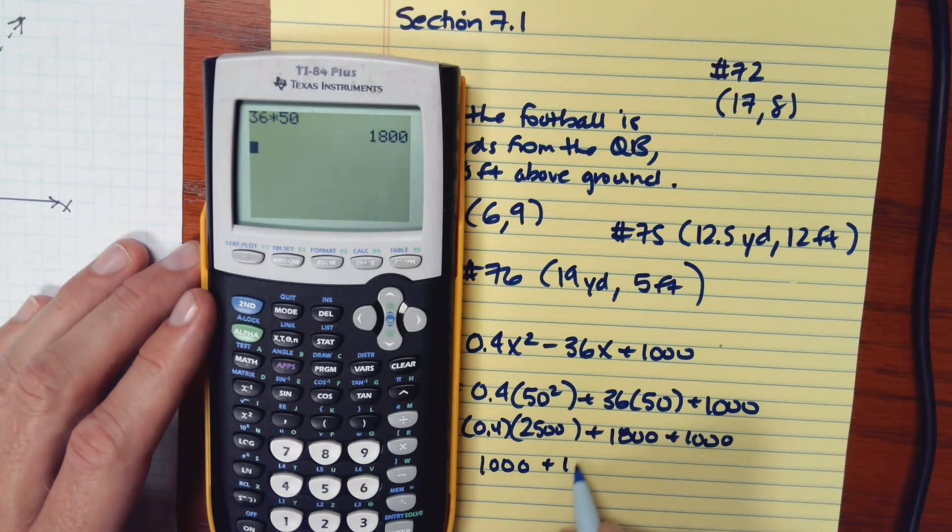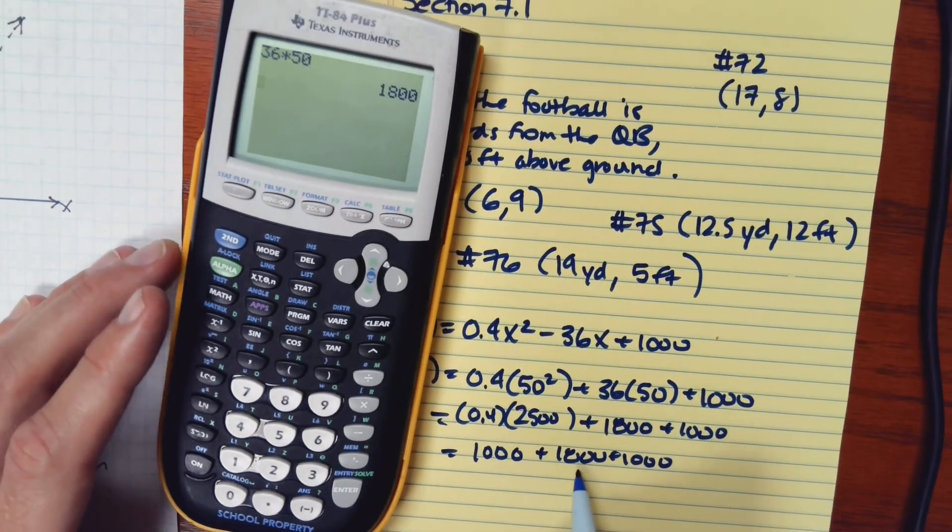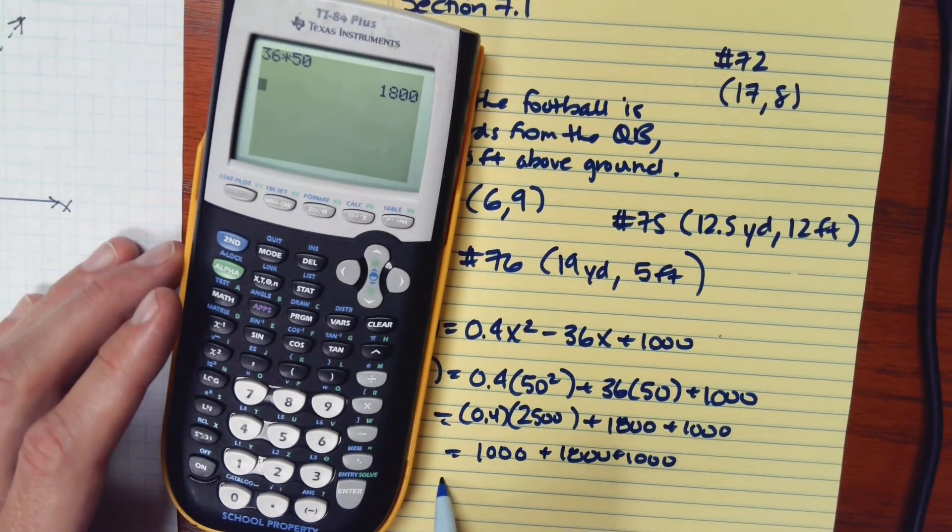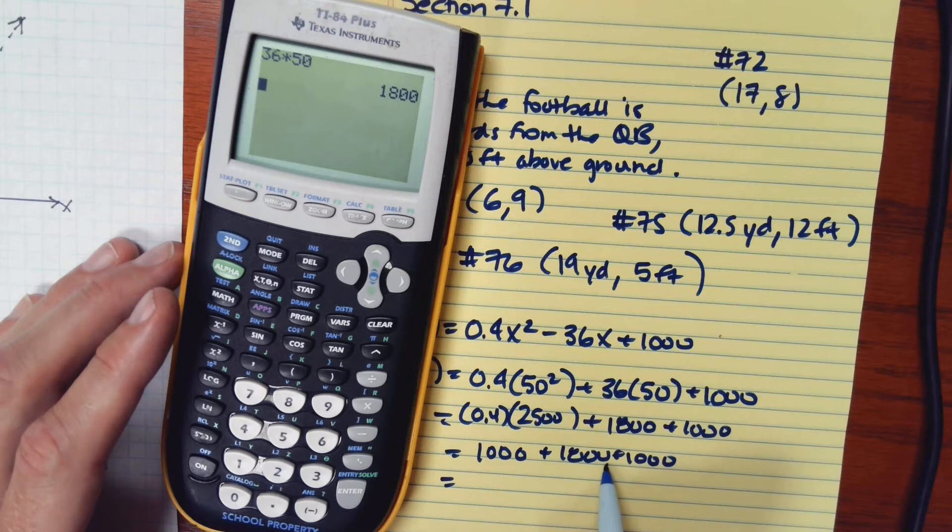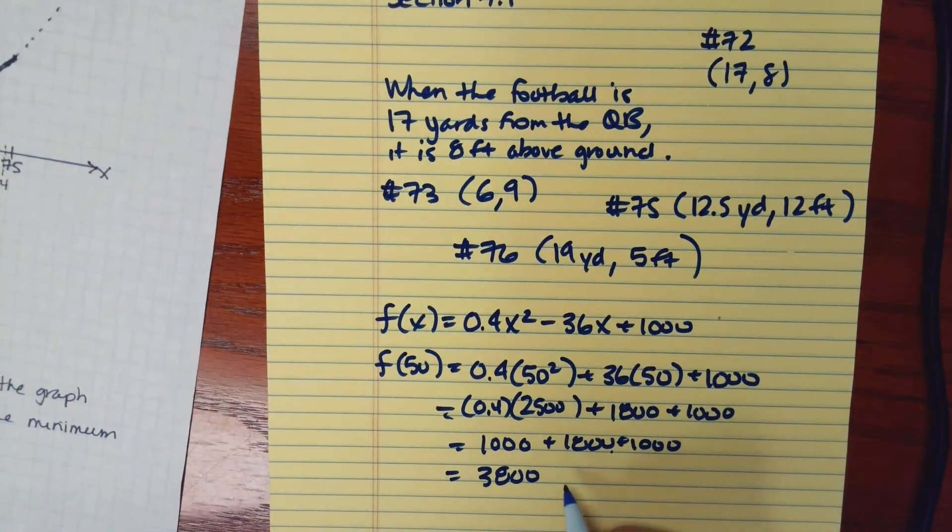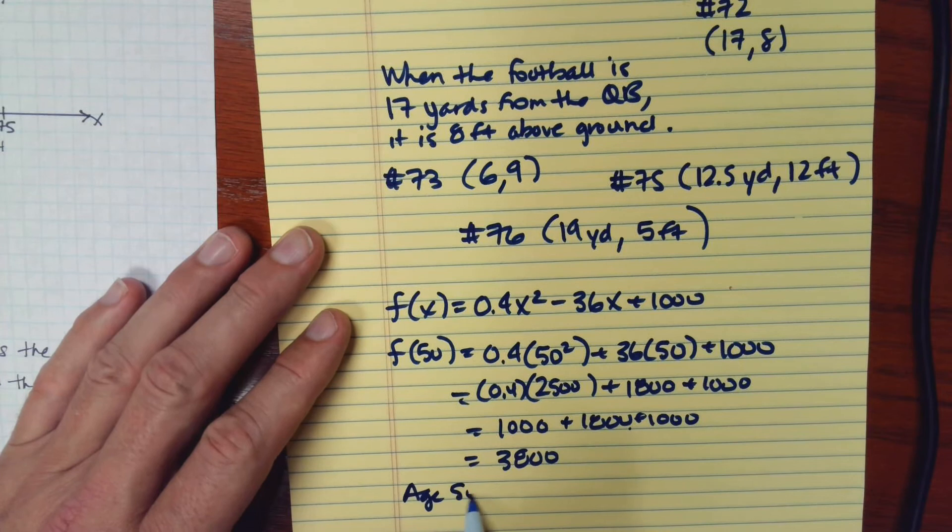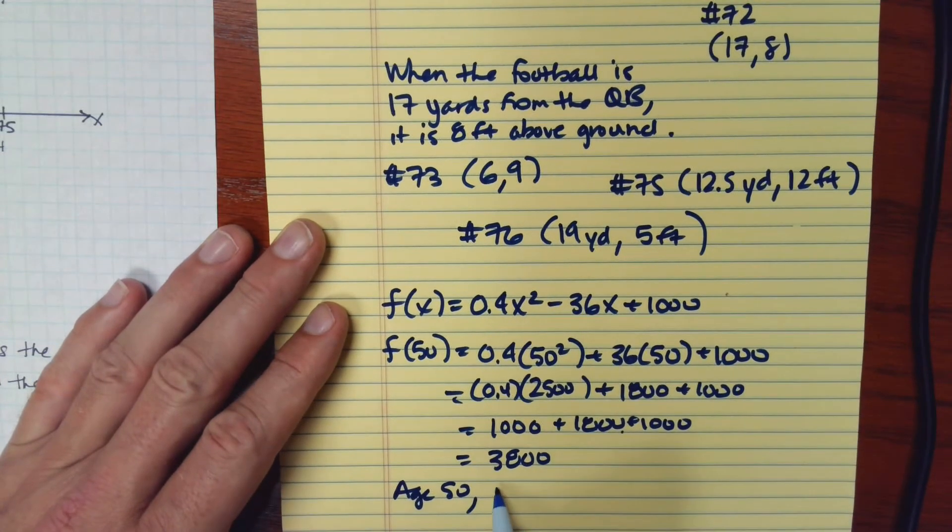And I'll just copy all this down. So I end up with 1,000 minus 1,800 plus another 1,000. So 1,000 minus 1,800 is negative 800. Add 1,000. That's 200. So for a driver age 50, we expect to have 200.